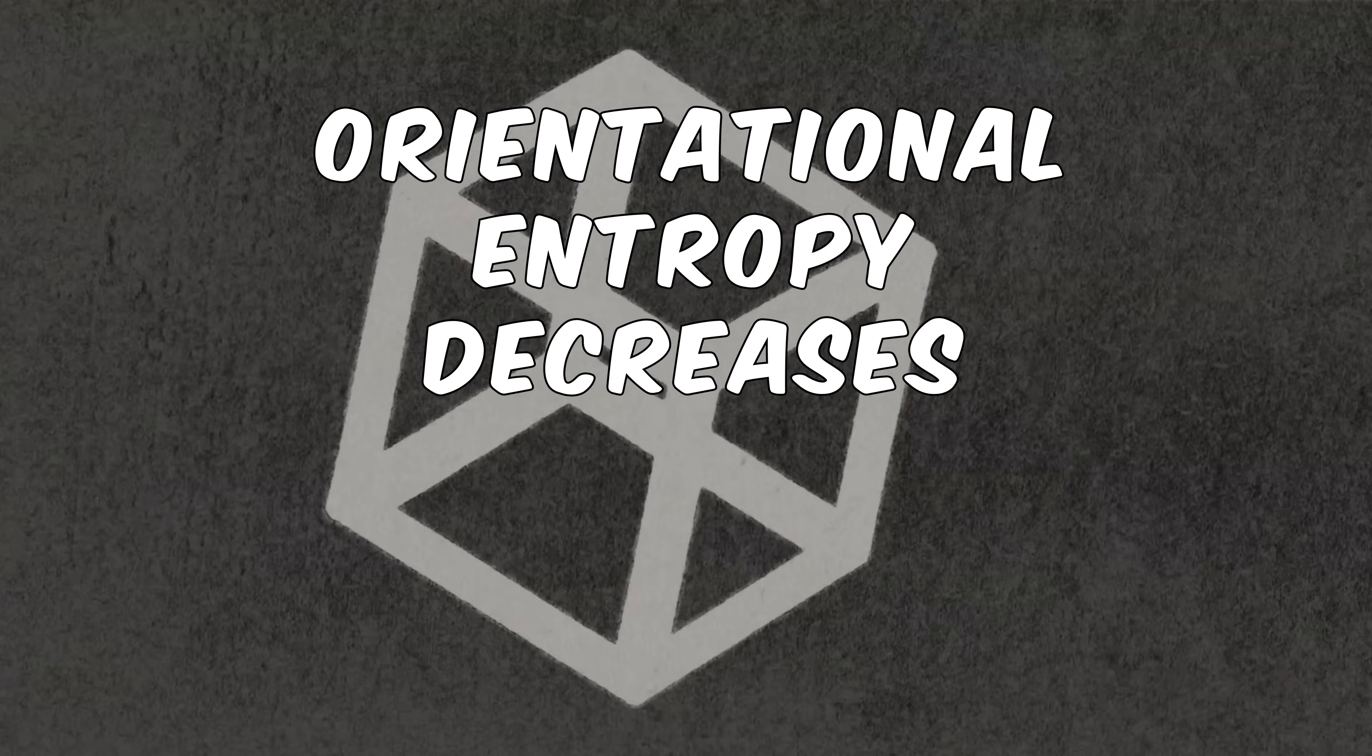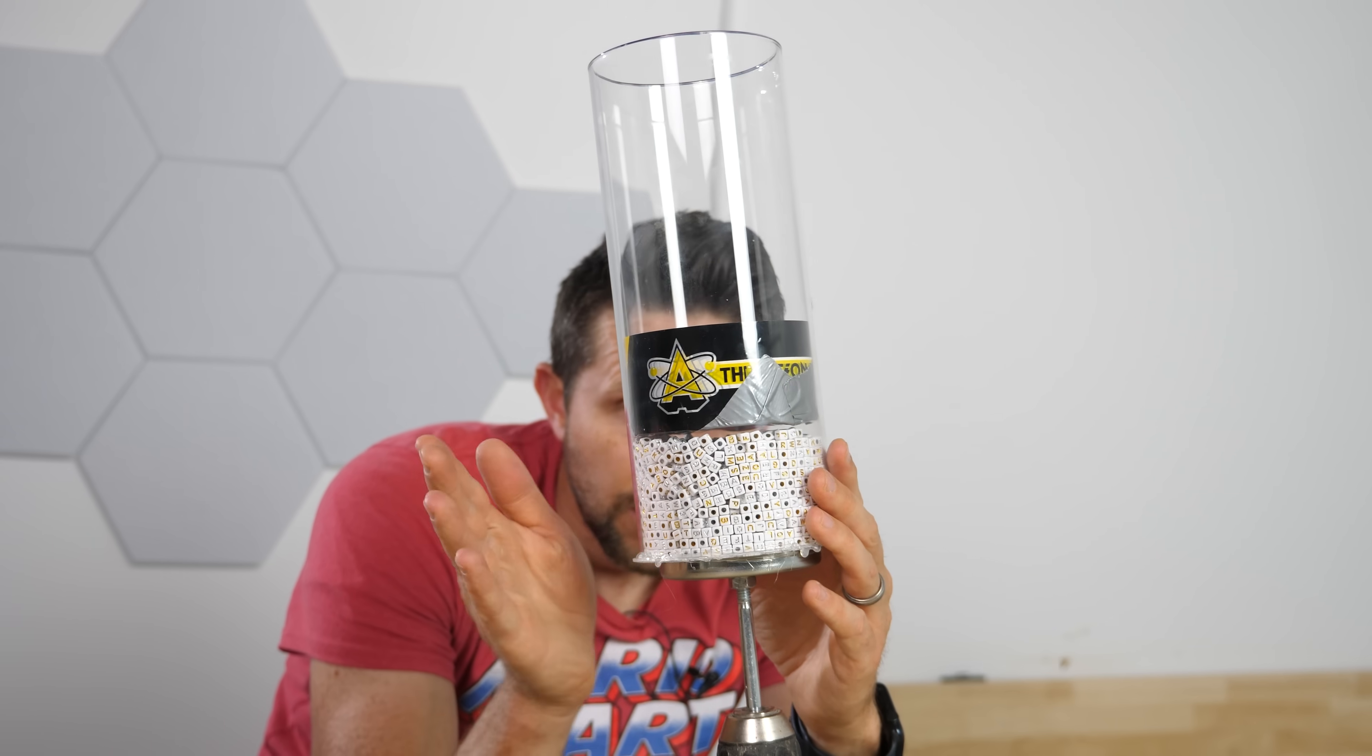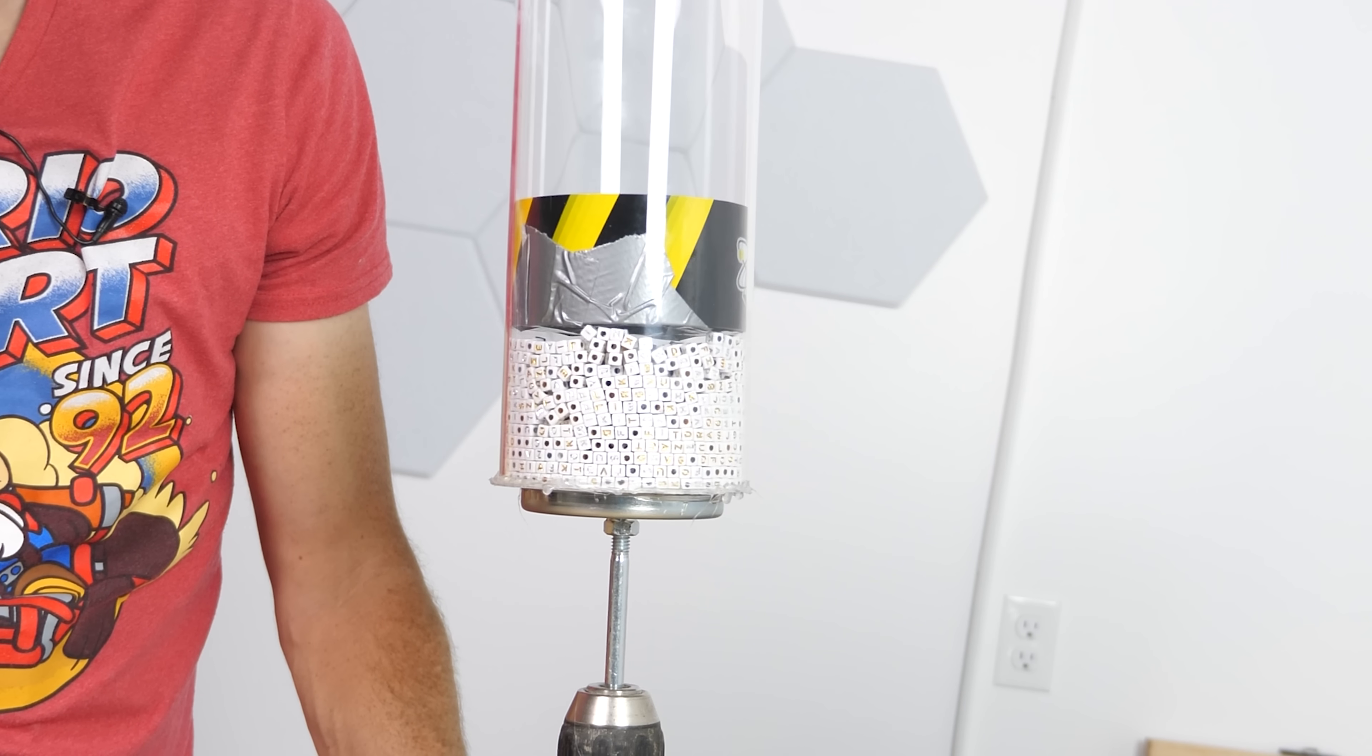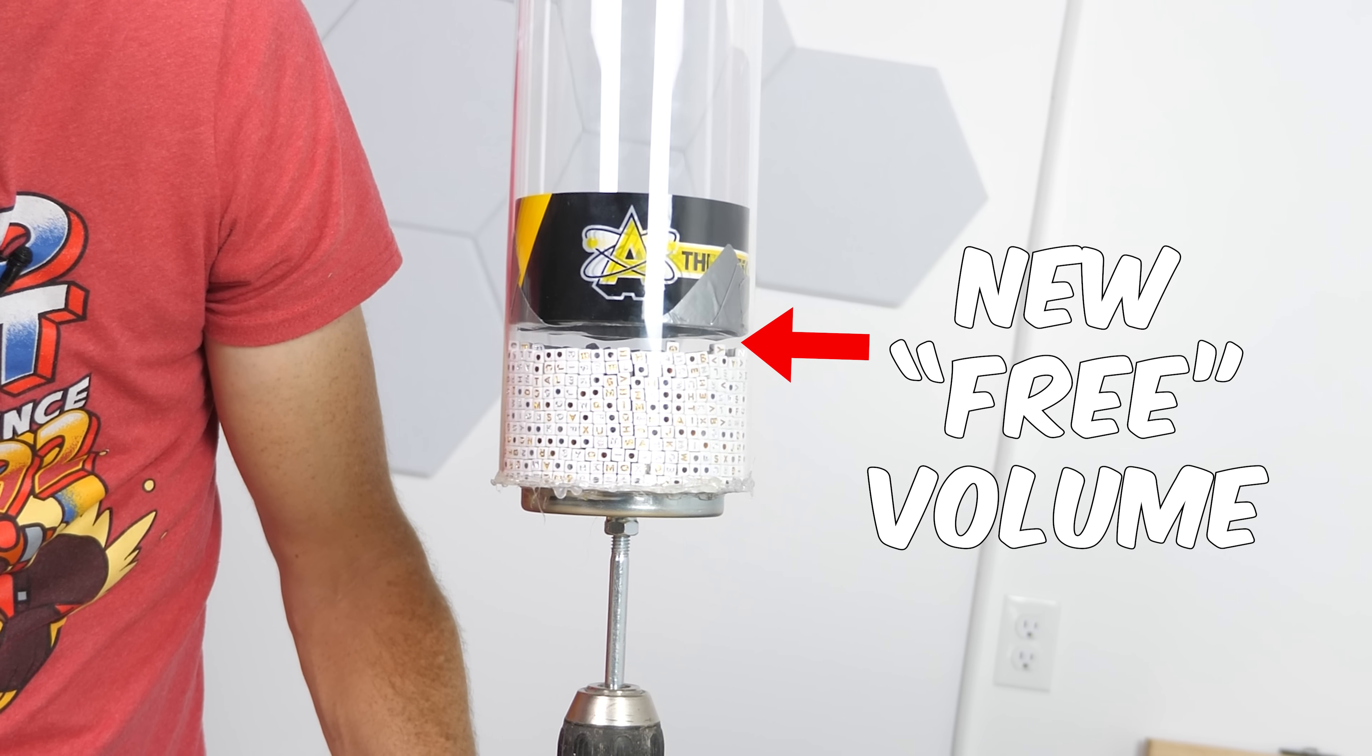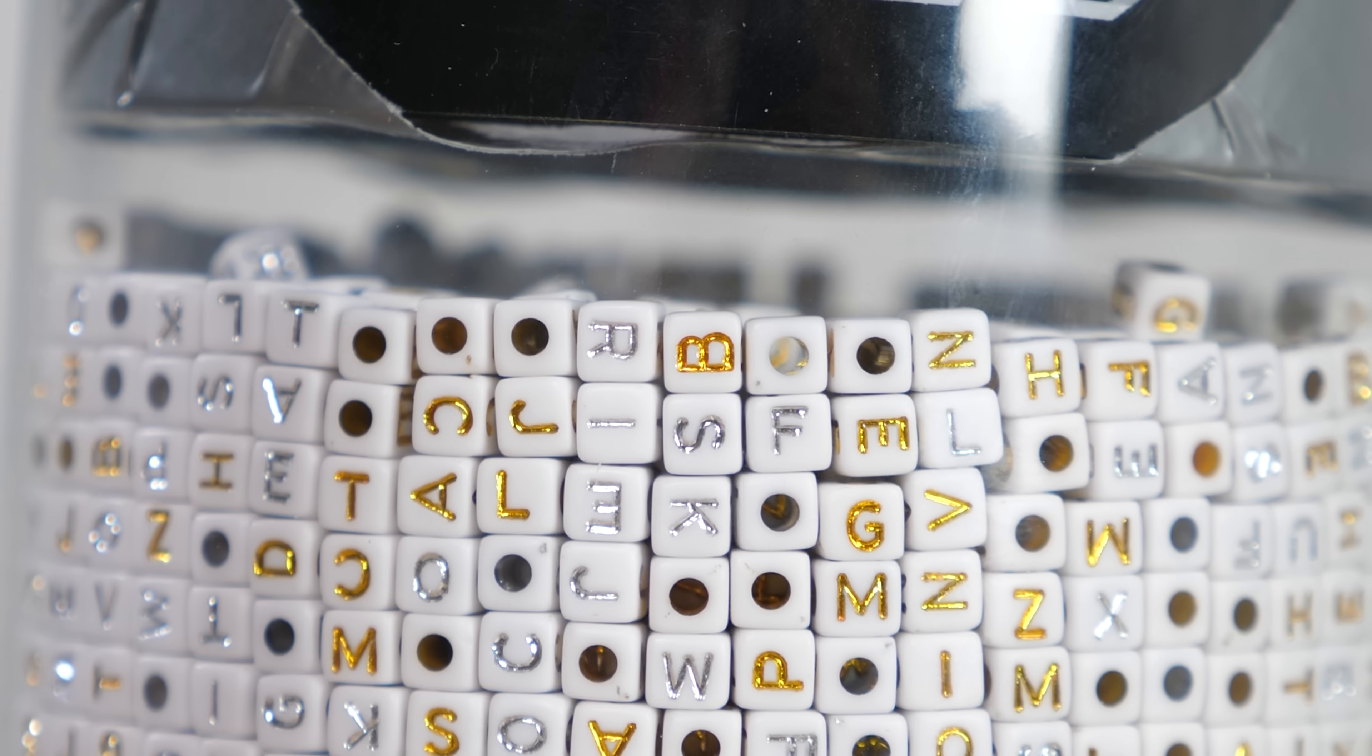But this loss in entropy is way more than offset by a huge increase in translational entropy of the system. What I mean by this is that when the dice are disordered, they take up this amount of volume. But once the dice are ordered, and you look at the same volume, you can see that there's this new amount of free volume that opens up.